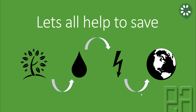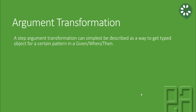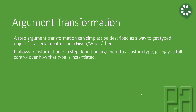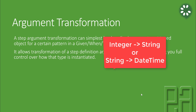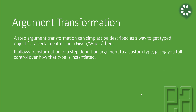Argument transformation: a step argument transformation can simplest be described as a way to get a typed object for a certain pattern in the given-when-then scenario. This is very important. If you want to convert an object or a type to a custom type, you can do that via this concept. It allows the transformation of a step definition argument to a custom type, giving you full control over how that type is being instantiated. So if you want to convert certain types — say, an integer to a string, or a string to a datetime format — you can do that using argument transformation available in Cucumber out-of-the-box.